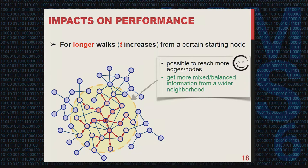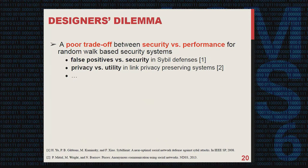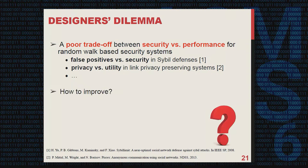However, the downside of longer walks is that the terminal nodes are more distant from the starting node and thus are less trusted. All these pros and cons of long walks have induced a poor tradeoff between security and other desirable properties. For example, in Sybil defenses, longer walks can reduce the number of misclassified honest users — the false positives — however, it also gives adversaries more power to corrupt the honest region, putting security at risk. For link privacy preserving systems, a longer walk can enhance privacy at the cost of degraded utility.